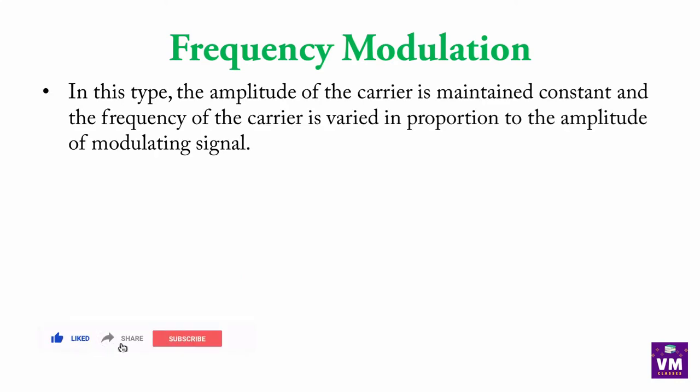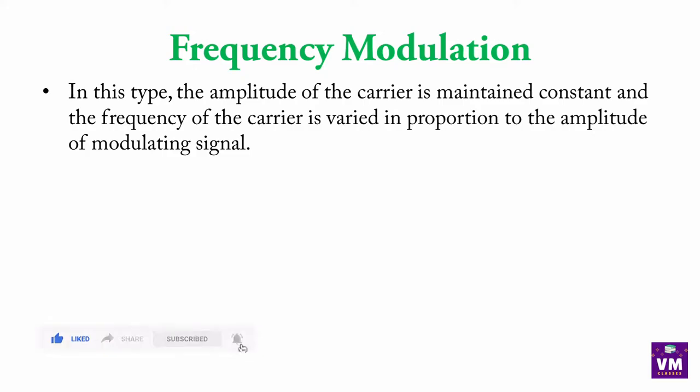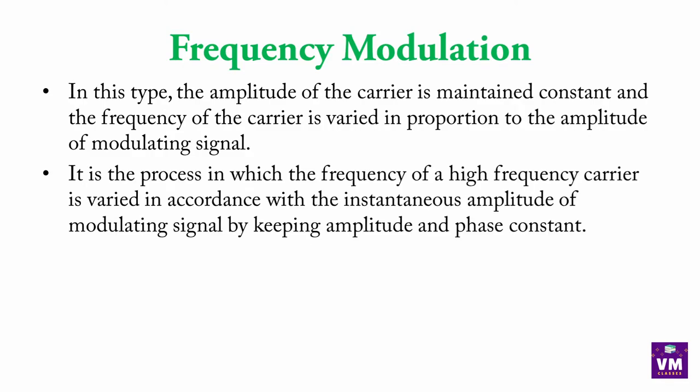Frequency Modulation: In this type, the amplitude of the carrier is maintained constant and the frequency of the carrier is varied in proportion to the amplitude of the modulating signal. Jab humne Amplitude Modulation dekha tha, tab usme Amplitude vary ho raha tha. Toh yahan par Frequency vary hoti hai aur Amplitude constant rehta hai.